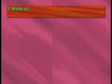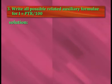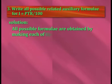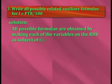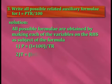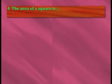Write all possible related auxiliary formulae for i is equal to p·t·r by 100. Solution: all possible formulae are obtained by making each of the variables on the RHS the subject of the formula. That is: p is equal to i into 100 by t·r; t is equal to i into 100 by p·r; r is equal to i into 100 by p·t.